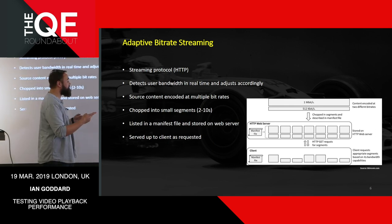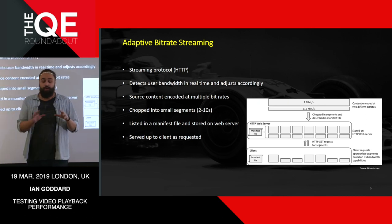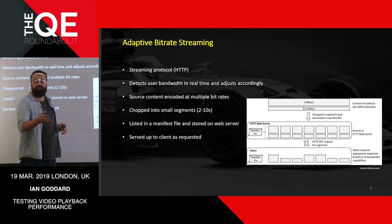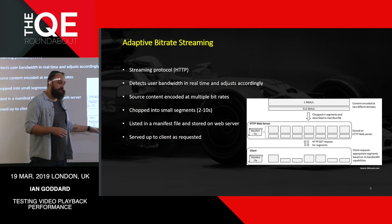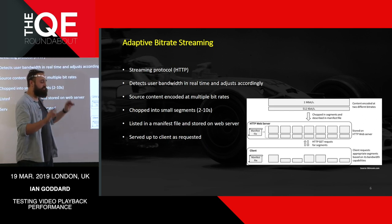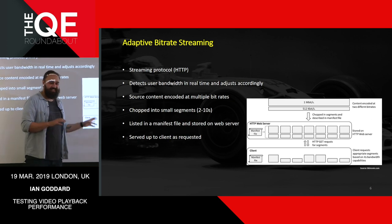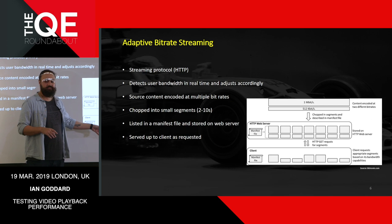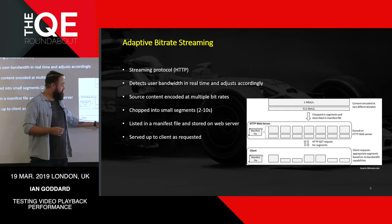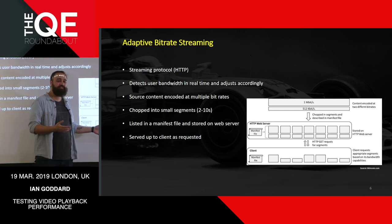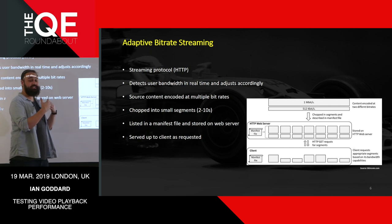The exact same content is stored at two different qualities — one at one megabit, one at 512 kilobit. At the client — your phone, television, whatever — you have your manifest file telling you where to find the segments. We detect your bandwidth: if it's good, we serve the one-megabit content. If someone else logs onto Netflix in your house and bandwidth drops, we serve the 512-kilobit version. It checks again each segment and adapts as your bandwidth does.